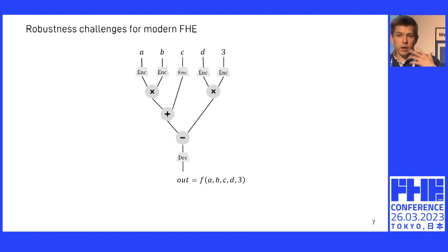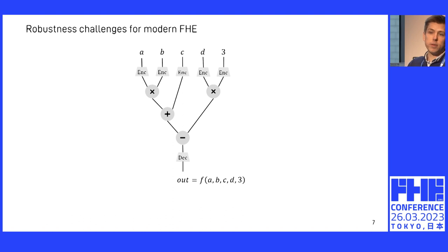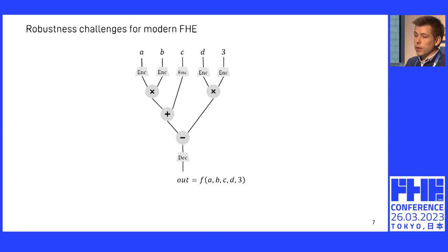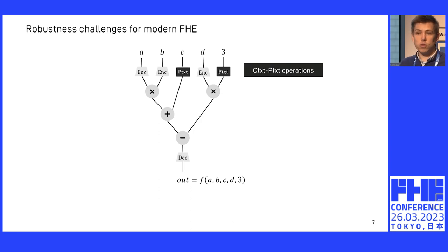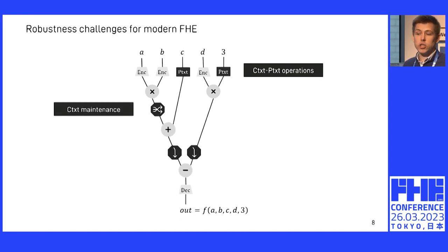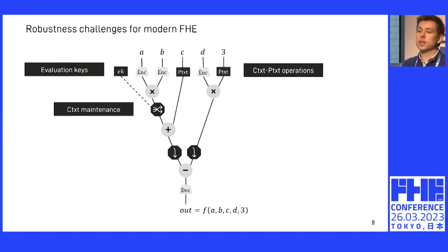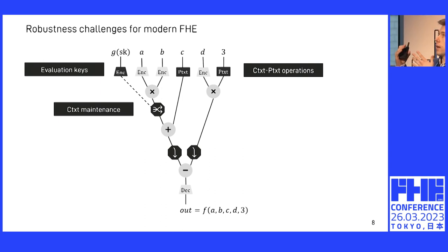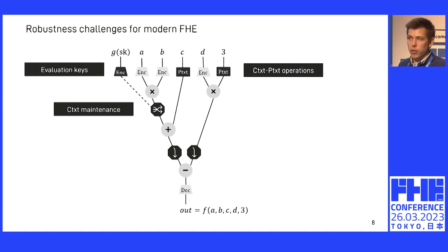This is the interface that you usually think of when you program FHE: you have your inputs at the top, you encrypt those, then you have an arithmetic circuit, and at the end you decrypt and the result is equal to the computation over the plaintext. The first deviation from this ideal view is that we have ciphertext-plaintext input — something we don't really have in traditional cryptography. And if you try to port existing solutions from traditional crypto to FHE, you'll have to deal with this. Similarly, we have ciphertext maintenance operations that take evaluation keys, and due to circular security, these evaluation keys are actually encryptions of the secret key — again not something seen in classical crypto.